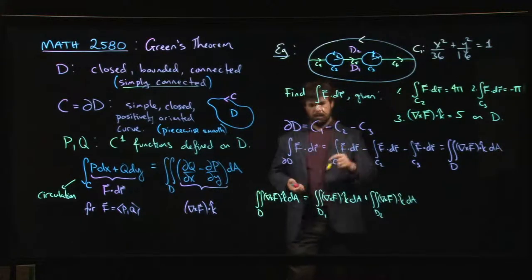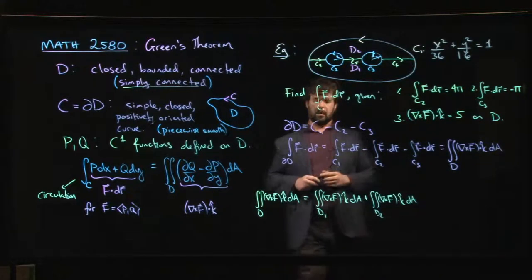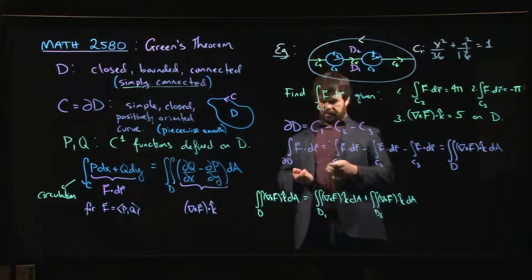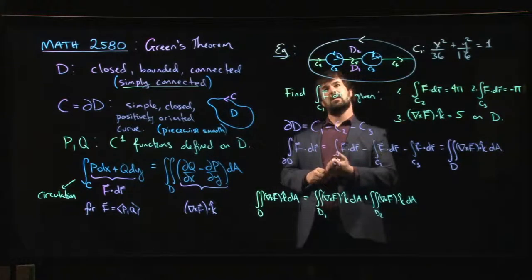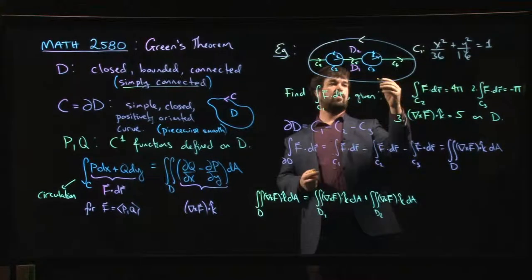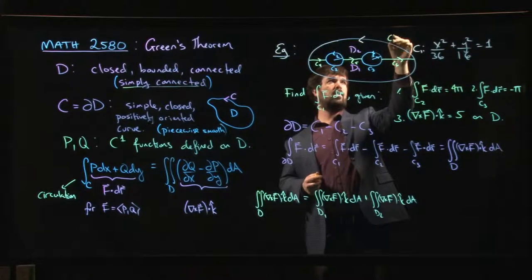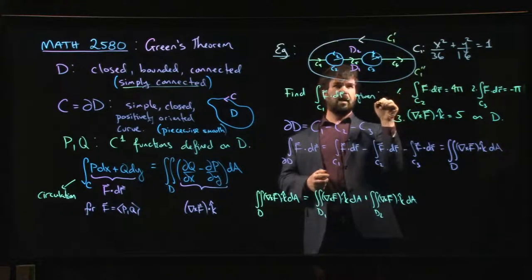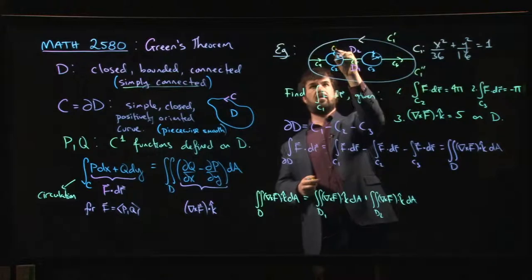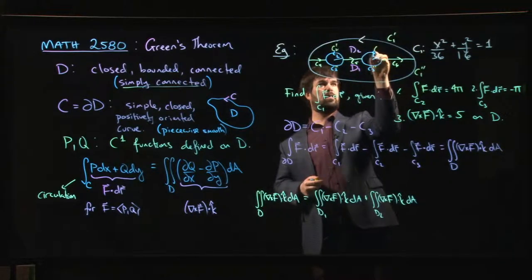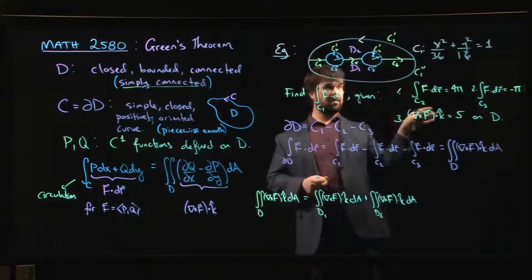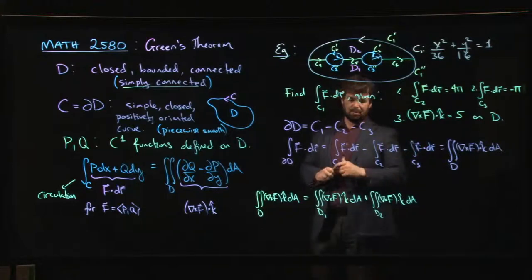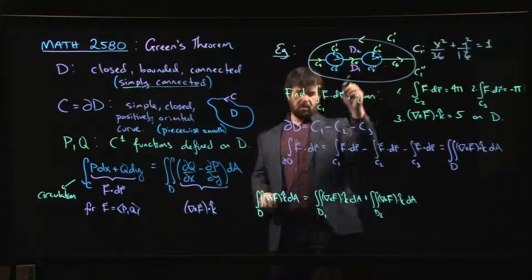On the one hand, we would know that the integral over D of the curl of F dot K dA should be the integral over D1 plus the integral over D2. That's clear enough. But now, for the integral over D1, I can apply Green's theorem. So let's kind of go with like this is C1 prime for the top half of the ellipse and C1 double prime for the bottom half. Let's do similar notation. It gets a little bit messy. Maybe there's a better notation, but let's go with that.